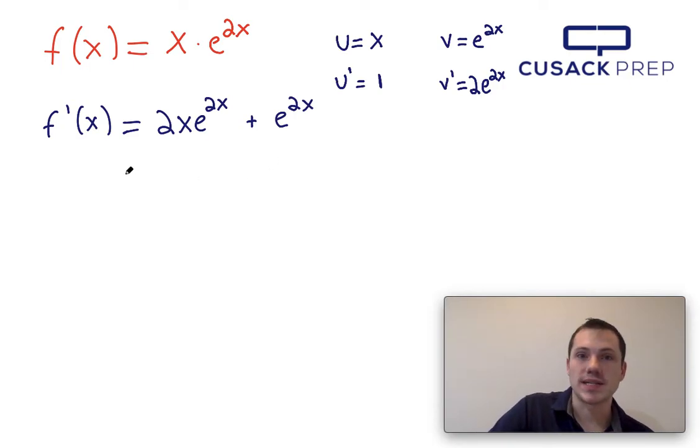Now it's possible that's the answer choice that's presented to you. It's also possible, if it's multiple choice, they may factor the e to the 2x out and write this as e to the 2x times 2x plus 1.